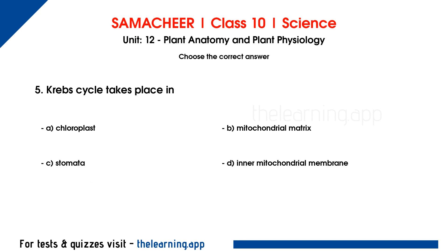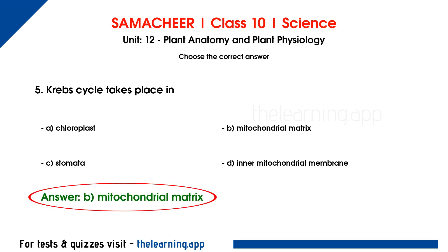Fifth question: Krebs cycle takes place in dash. Options are A, chloroplast; B, mitochondrial matrix; C, stomata; D, inner mitochondrial membrane. The correct answer is B, mitochondrial matrix.